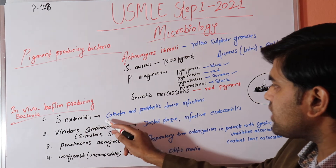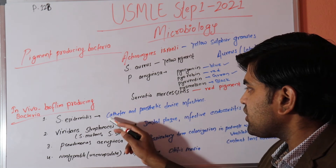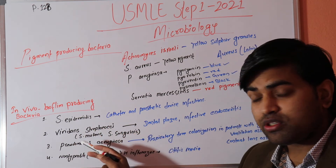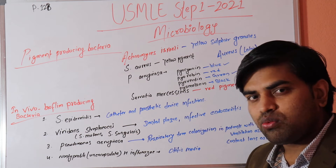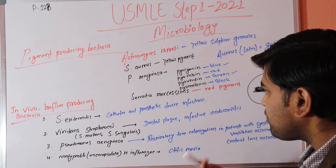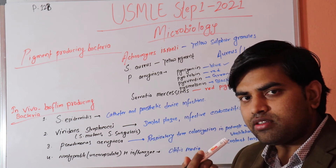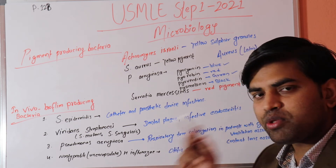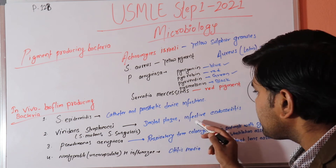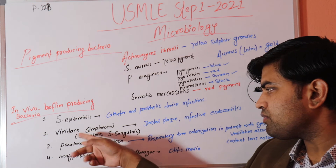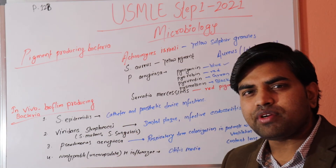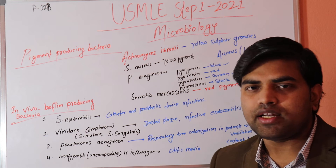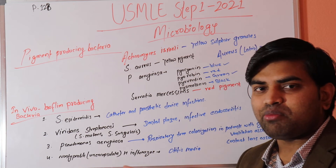To summarize Staph epidermidis: it causes biofilm on catheters and prosthetic devices. Moving to viridans streptococci — Streptococcus mutans and Streptococcus sanguineus — they form biofilm in two main locations: dental plaque on the teeth, and infective endocarditis on heart valves. Both are very difficult to eradicate due to biofilm formation.